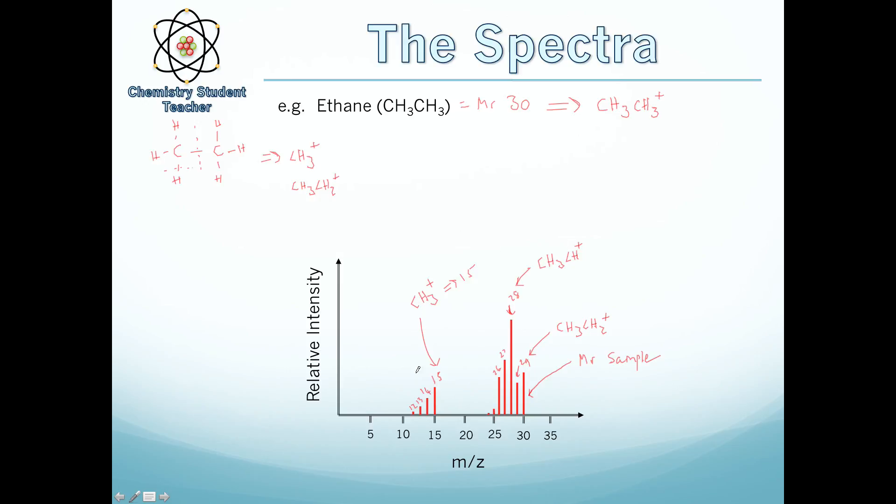So 15 is CH3, 14 will then be CH2, 13 will be CH, and 12 will just be carbon on it. So that's how we analyze a mass spectrum.